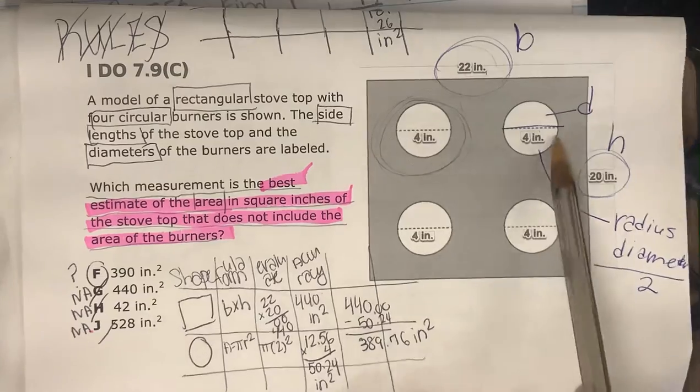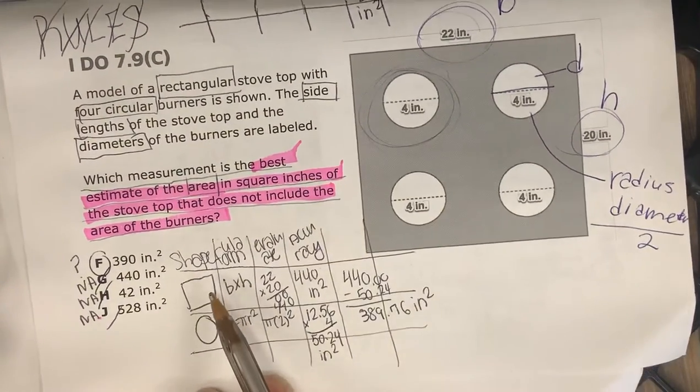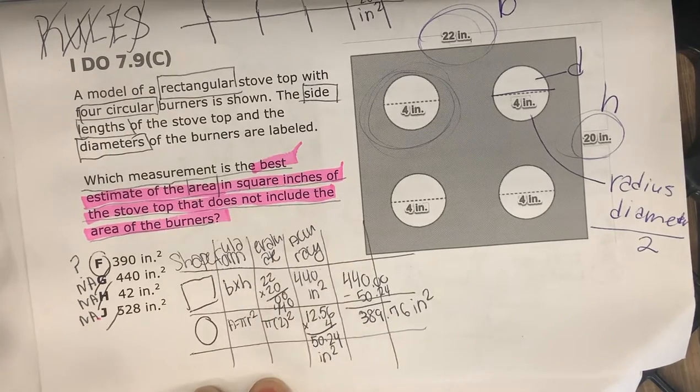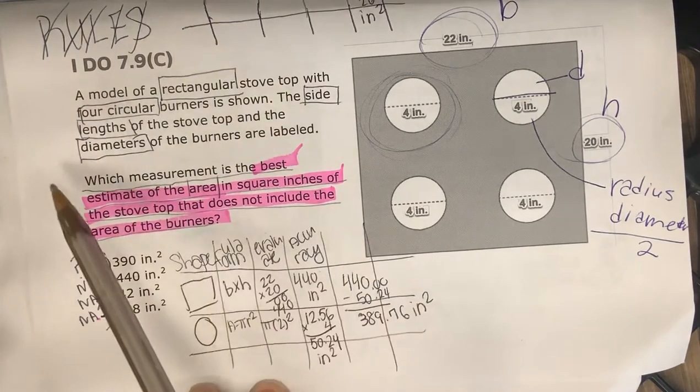So we have four burners and we have a rectangular stove. In my formula chart, I have the shape, the formula, I evaluate, then I have the accurate answer. So I read the word problem, underlined, highlighted the question.